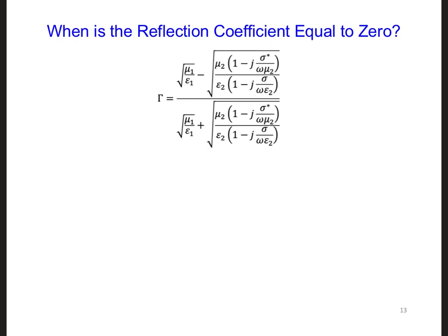It might not be obvious at first, but look at the numerator. If the second term is equal to the first term, the numerator will equal zero.